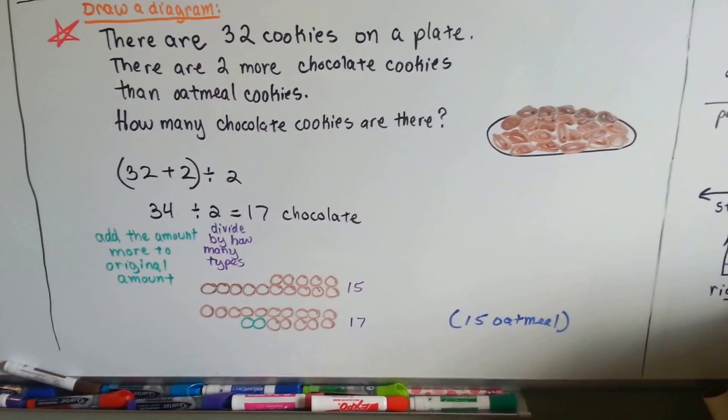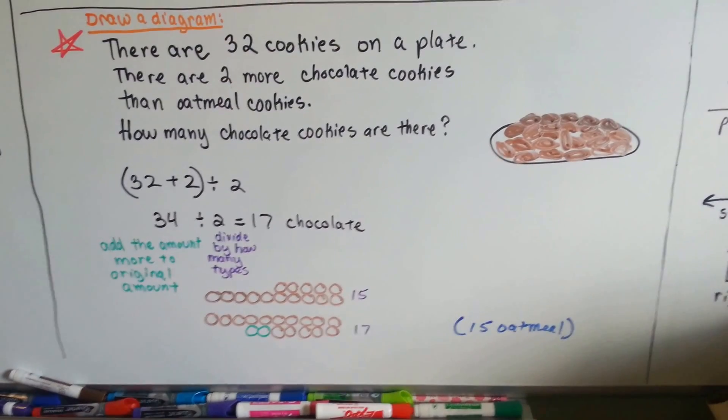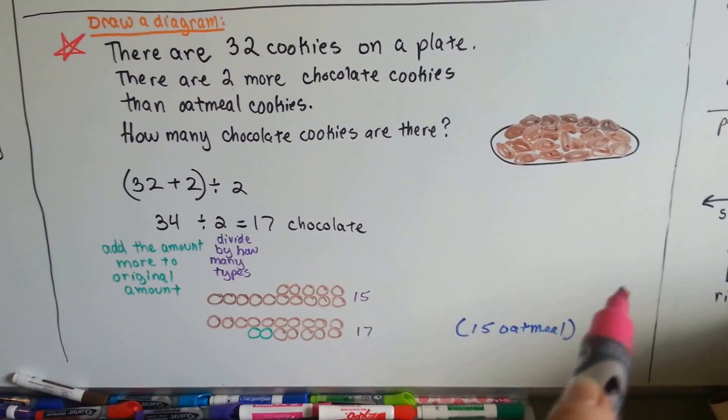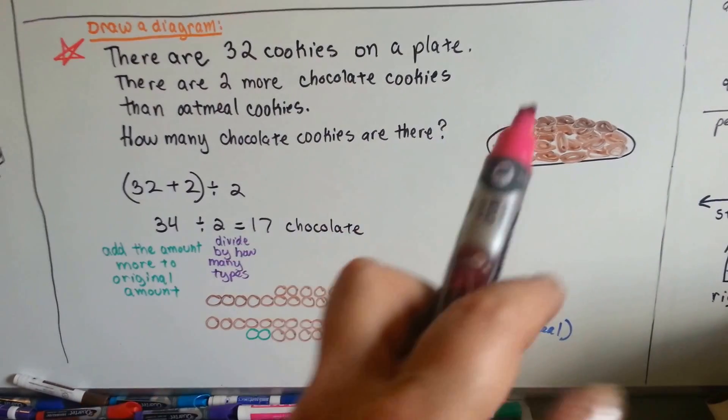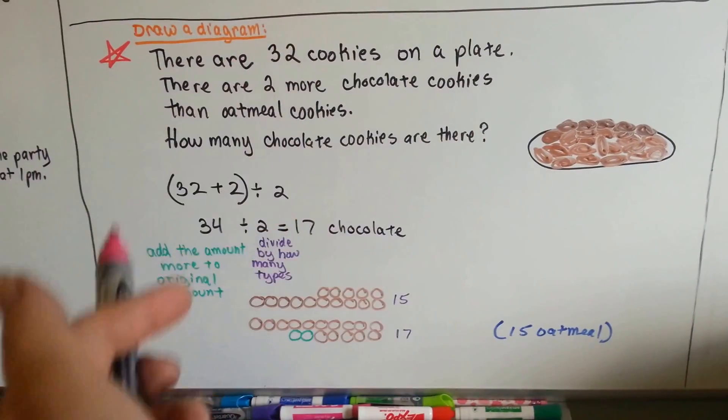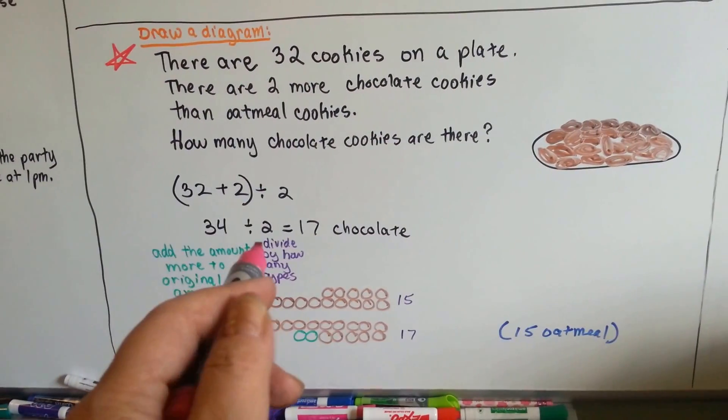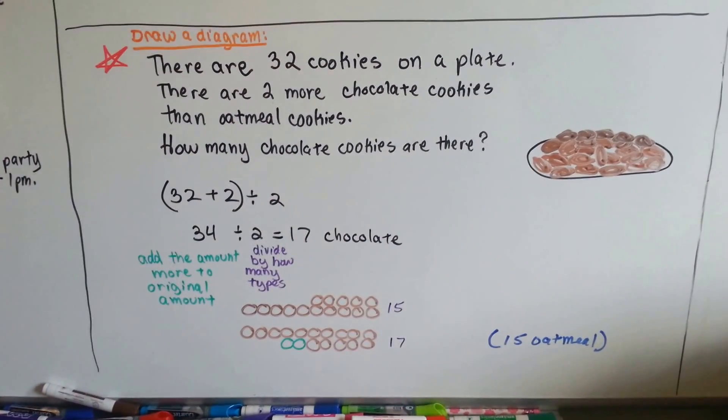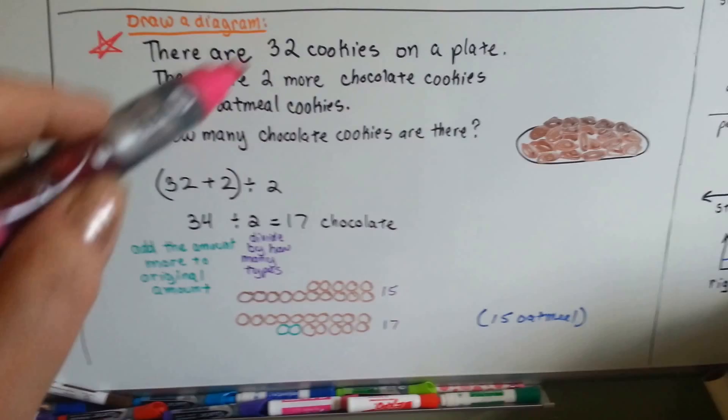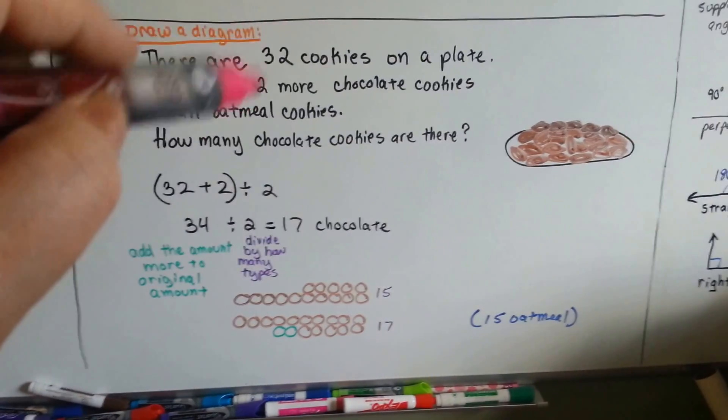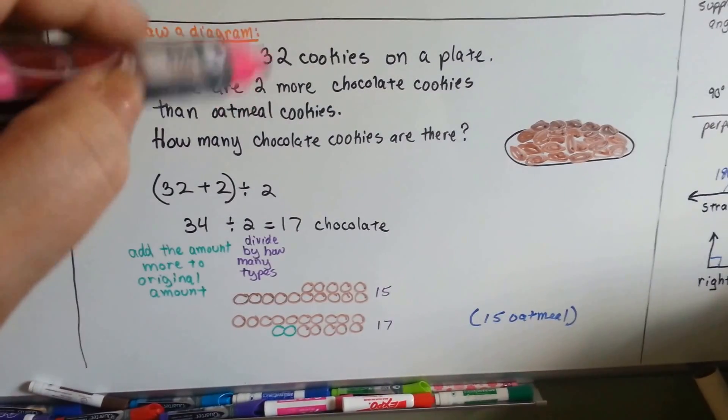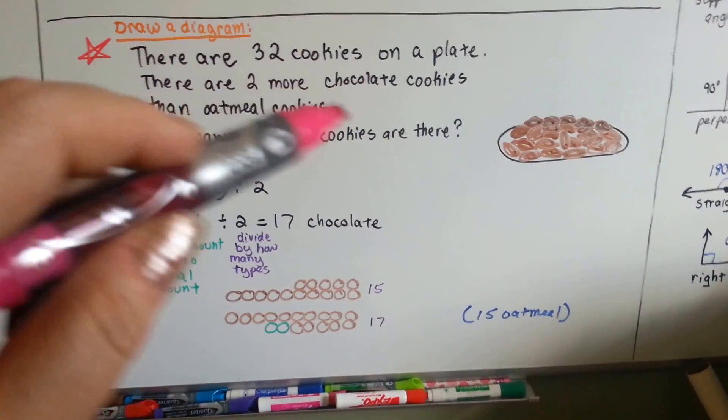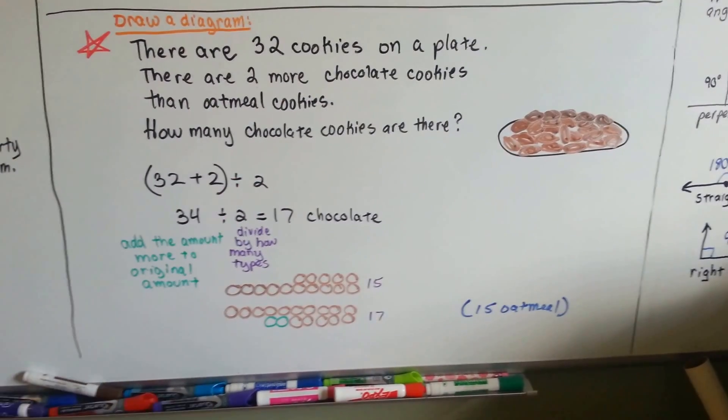Now, you could draw pictures to split them up. You could have even said, okay, 16 and 16. There's 16 oatmeal and 16 chocolate. And I'm going to take some away from the oatmeal and give it to the chocolate to try to make it so that there's two more than the other group. But it's easier to just add however many more to the original amount and then just divide it by how many types there are. There were two types of cookies, chocolate and oatmeal, so that's why we divided it by two.